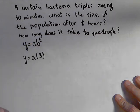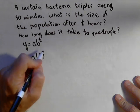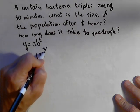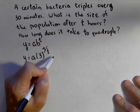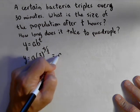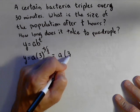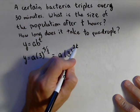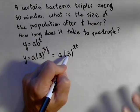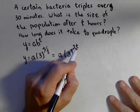It triples every 30 minutes, or every half hour. So I'm going to do t divided by one-half, which we can rewrite as a times three to the two t, because every half an hour we want to multiply by three. So it makes sense to have a two up there.